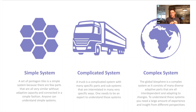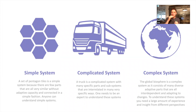Then there are complex systems, which are qualitatively different. The global biosphere, for example, is incredibly complex because it has all these adapting agents interacting and self-organizing peer-to-peer and highly interdependent. We can get all sorts of unpredictable, emergent, nonlinear behavior out of that, which we don't get from complicated or simpler systems. To understand complex systems, you need a great amount of experience and insight from different perspectives — no single expert can really understand the system. You need to build up and synthesize many perspectives.